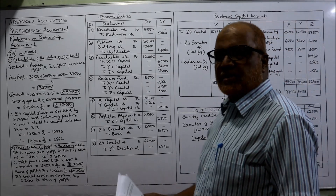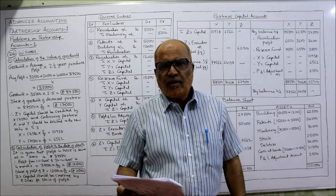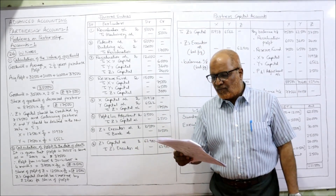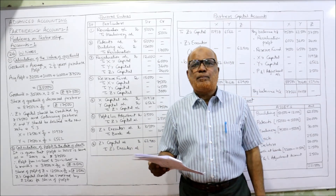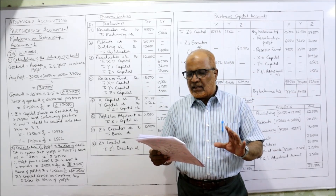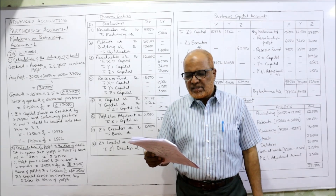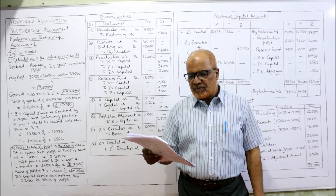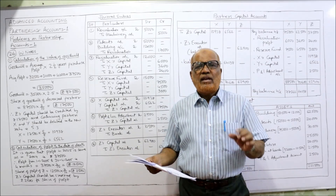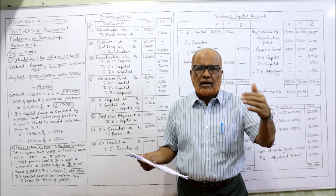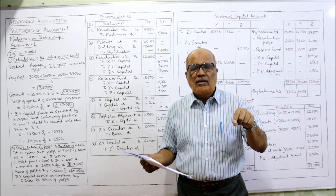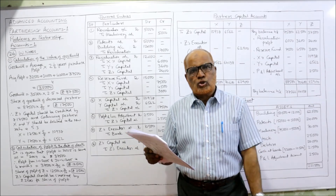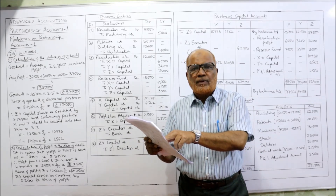Now see the 26th problem. X, Y and Z were partners sharing profits and losses in the ratio of 5:3:2 respectively. On 31st December 2004, the balance sheet stood as follows: sundry creditors, reserve fund, then capital accounts of X, Y, Z. Whenever a new partner is admitted or an old partner retires or dies, the reserve fund should be distributed among all partners in the profit sharing ratio.